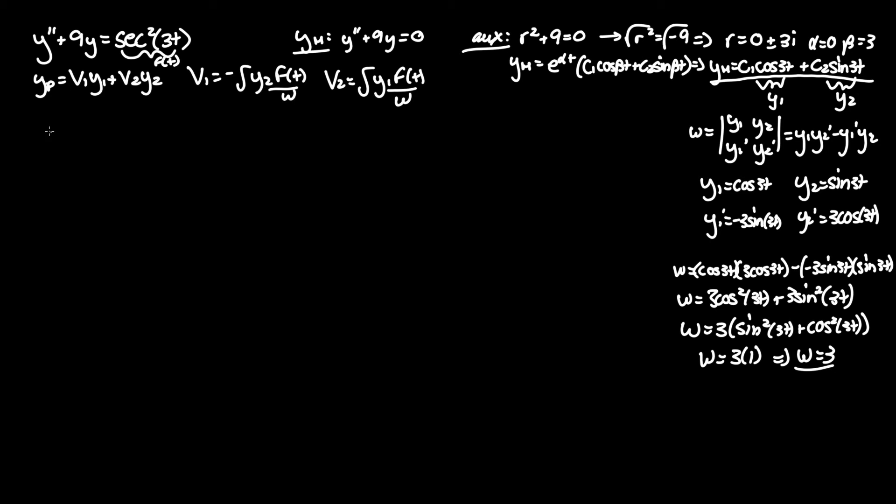Now we have all we need to find v1 and v2. So v1 equals negative integral of y2 sine of 3t times f of t secant squared of 3t over Wronskian of 3 dt. This equals negative one third integral of sine of 3t, where we will take one secant and flip it on the bottom to turn into cosine.